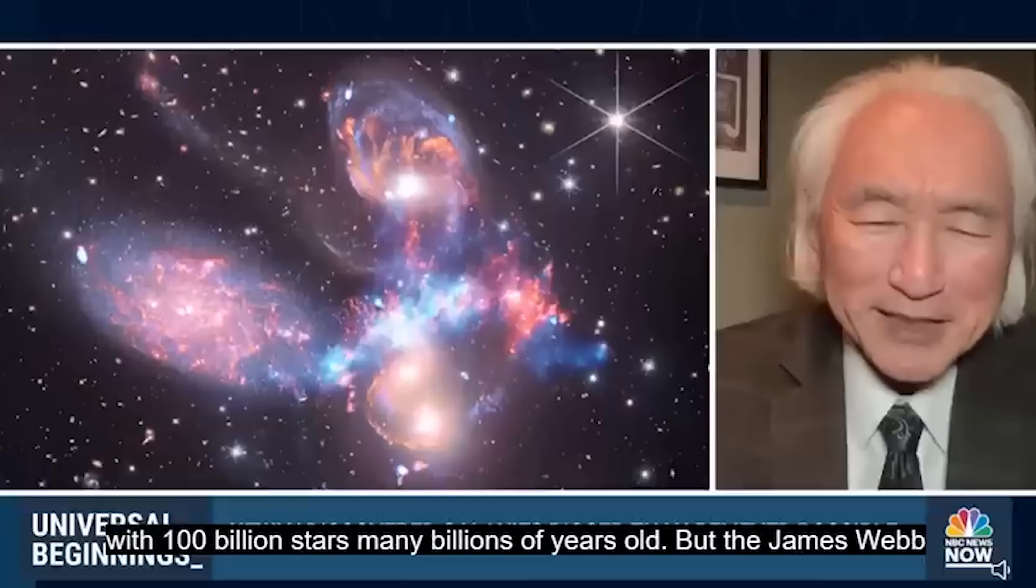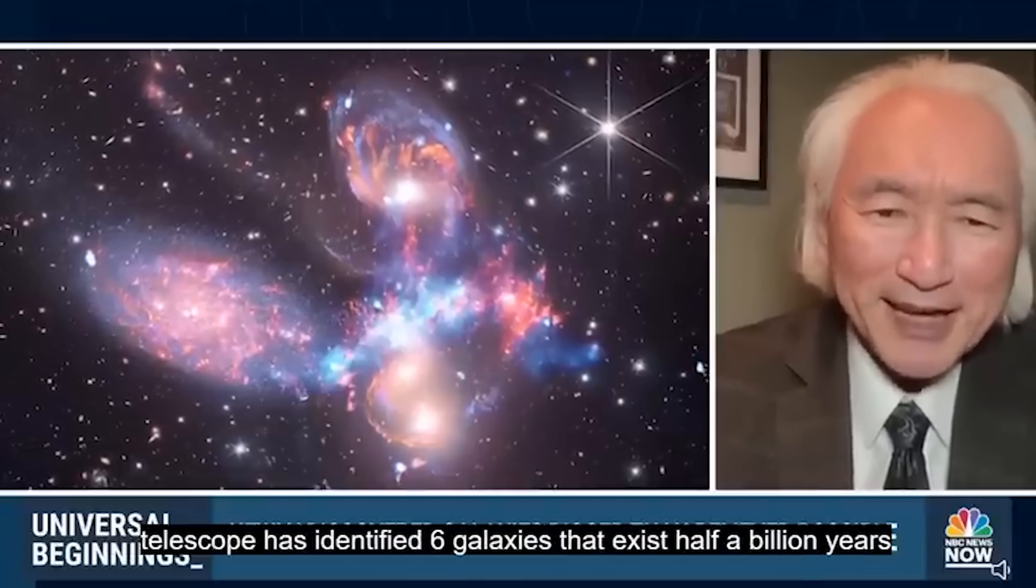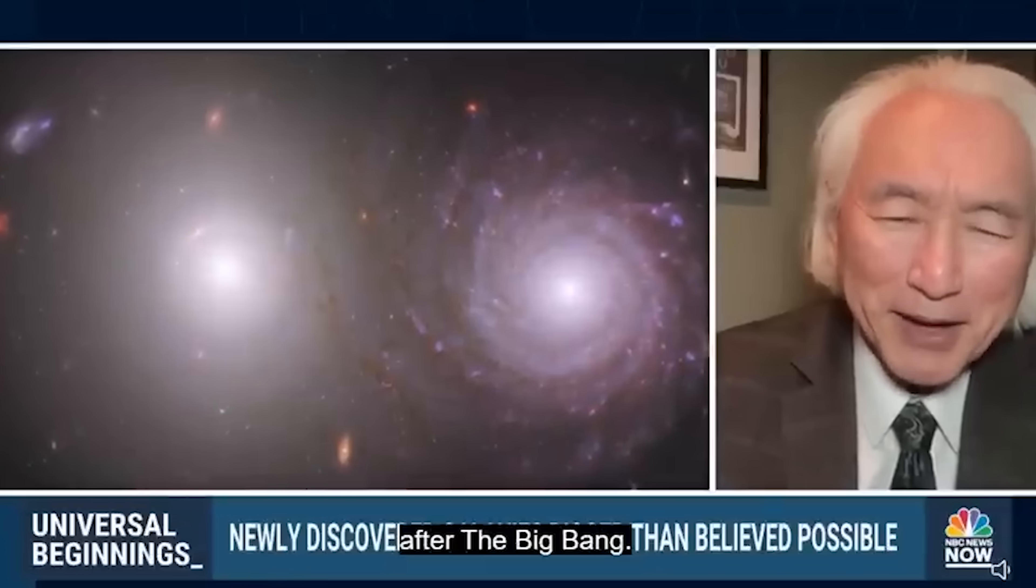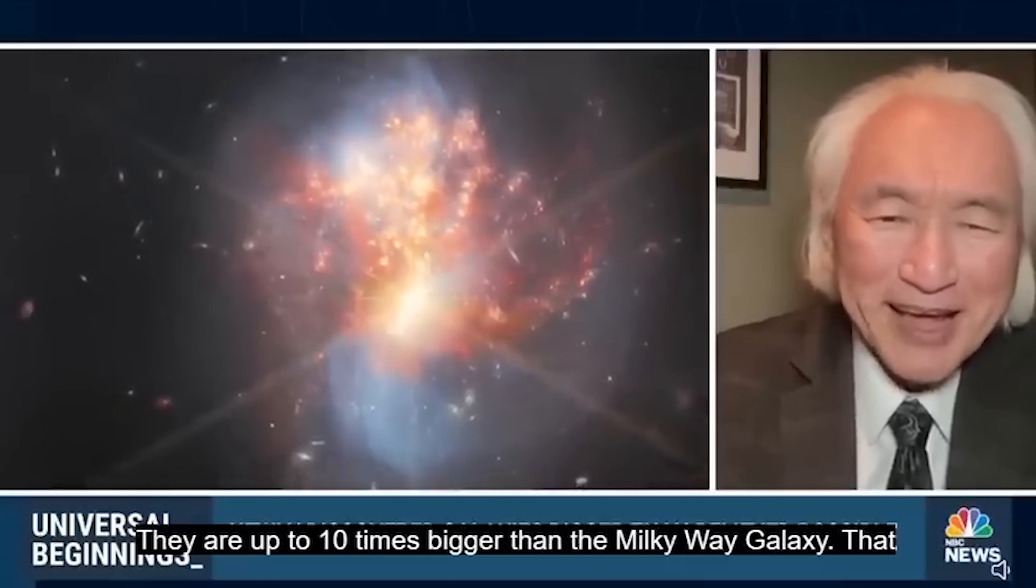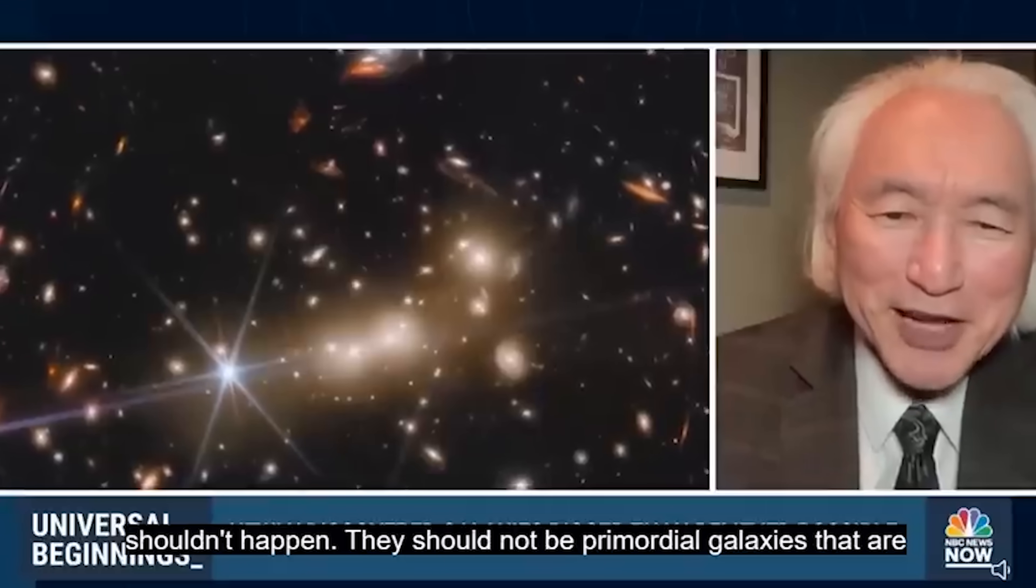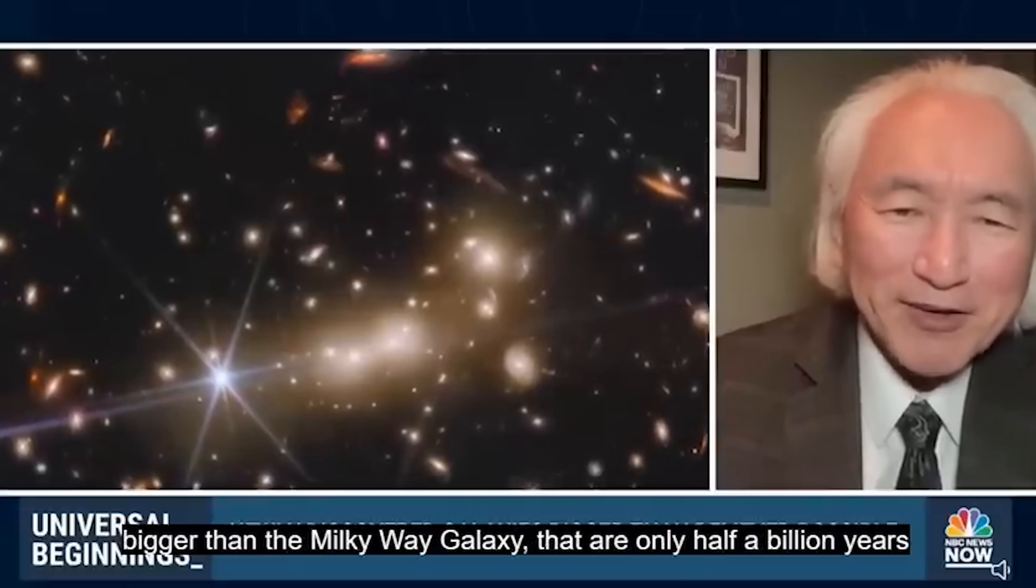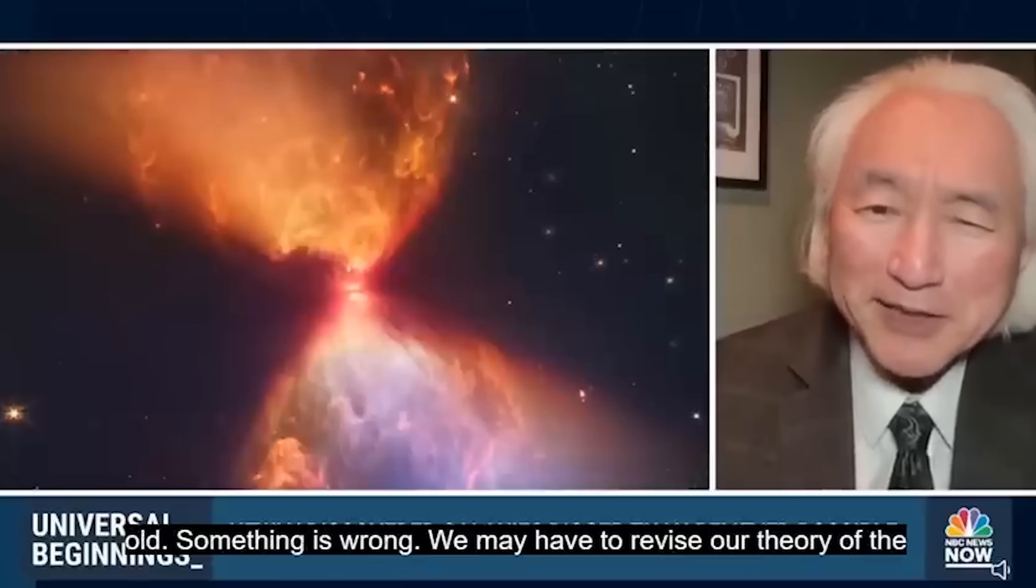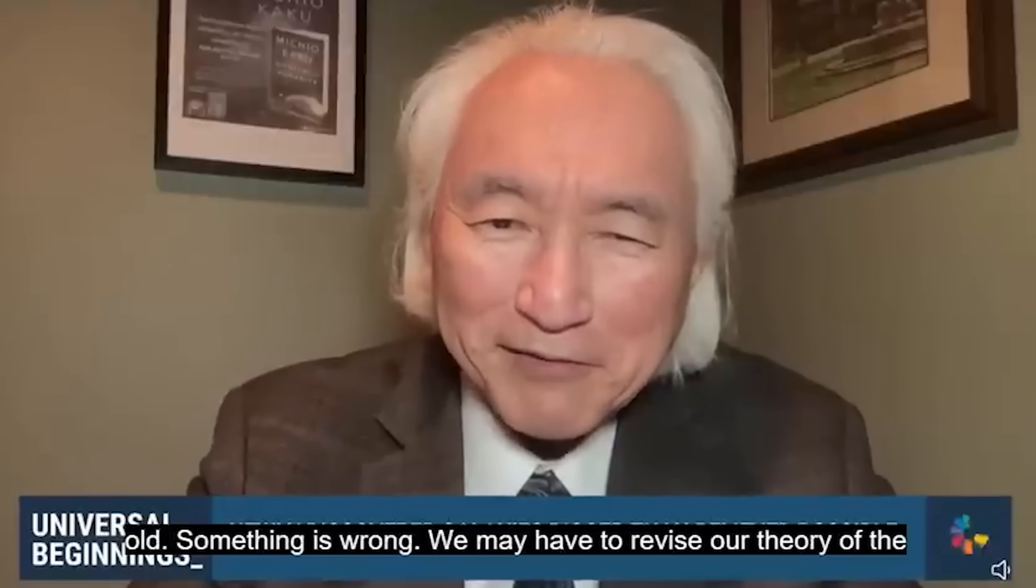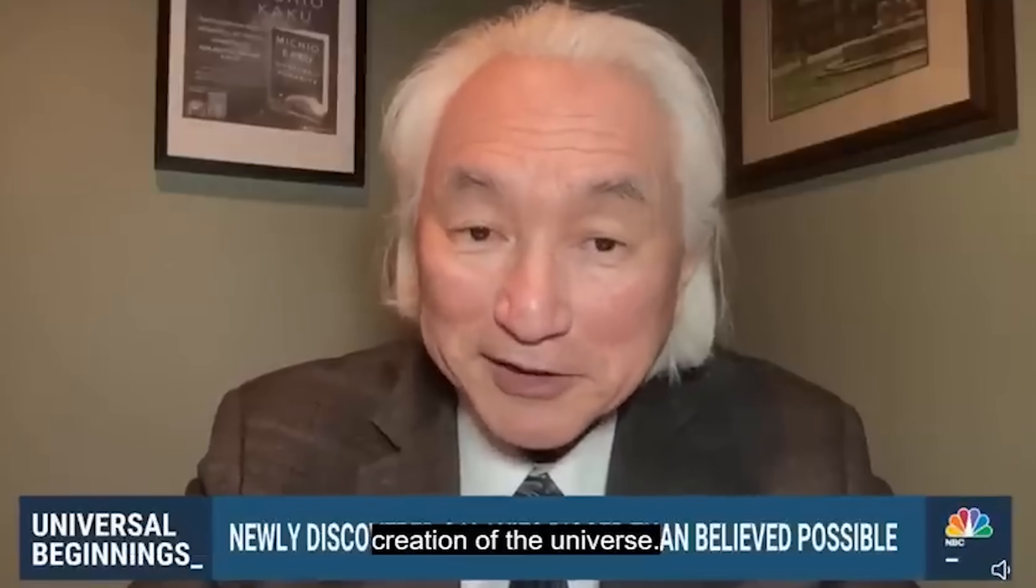Now, it takes many billions of years to create a galaxy like the Milky Way galaxy with 100 billion stars, many billions of years old. But the James Webb Telescope has identified six galaxies that exist half a billion years after the Big Bang that are up to 10 times bigger than the Milky Way galaxy. That shouldn't happen. There should not be primordial galaxies that are bigger than the Milky Way galaxy that are only half a billion years old. Something is wrong. We may have to revise our theory of the creation of the universe.